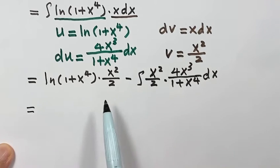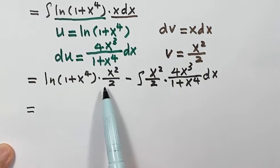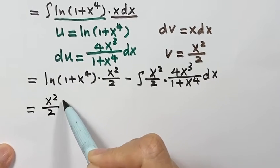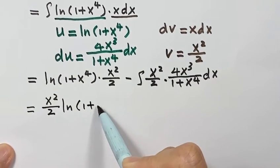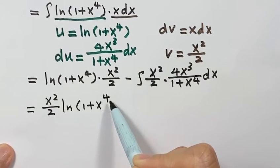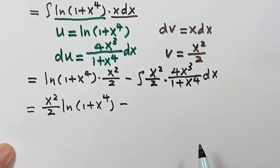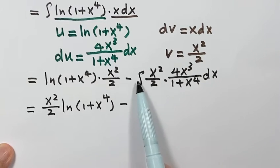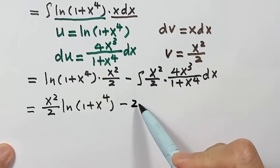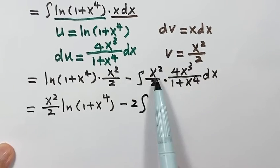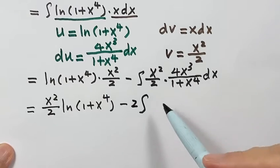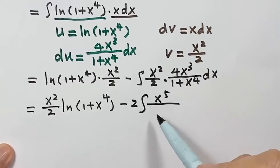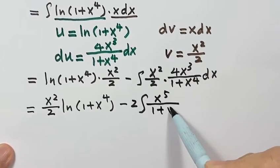In the next line we simplify. We write x squared over 2 first, times natural log of 1 plus x to the fourth, then minus. Here 2 and 4 simplify to 2, and we move the constant 2 to the front. Then x squared and x to the third combine to give x to the fifth. We copy the denominator, 1 plus x to the fourth, then dx.